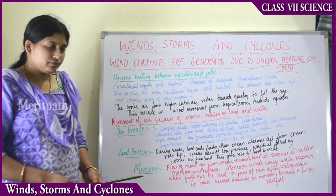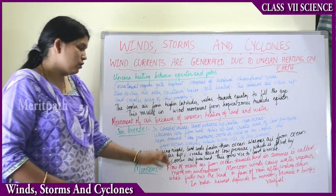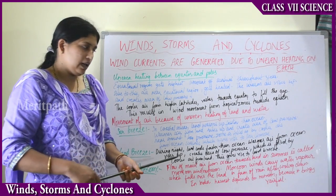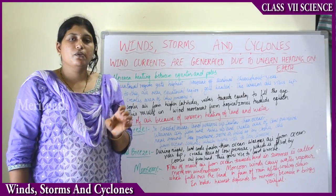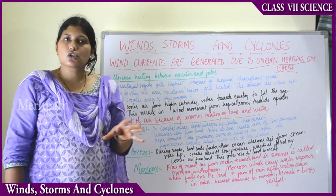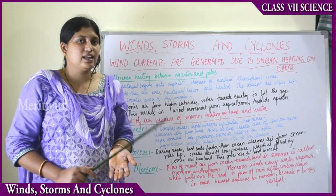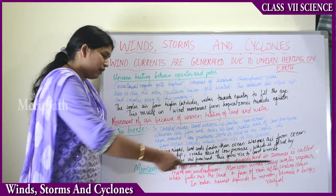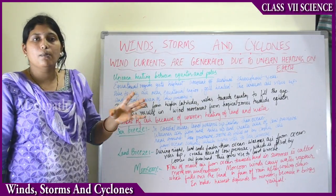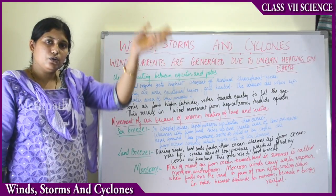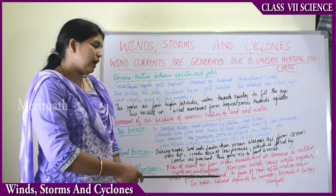This flow of moisture from the ocean toward the land in the summer is called monsoonal wind or monsoon. The word monsoon comes from the Arabic word 'mausim.' Monsoon winds carry water vapor which falls over the land as rain. In India, monsoon usually arrives in the starting weeks of June. The water vapor evaporates, forms clouds, cools down, and returns to earth as rainfall.